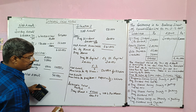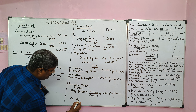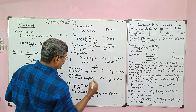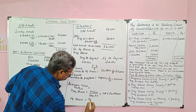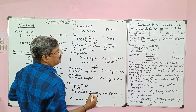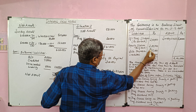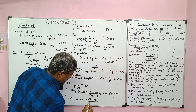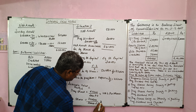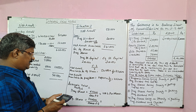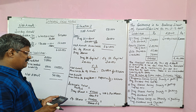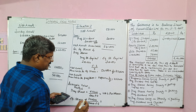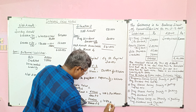Likewise, find equity share value under intrinsic value method. Net assets available for equity shares = 3,24,600. Number of equity shares = 3,00,000 divided by 10 = 30,000. So 3,24,600 divided by 30,000 = rupees 10.82 per share. We have completed the third situation.